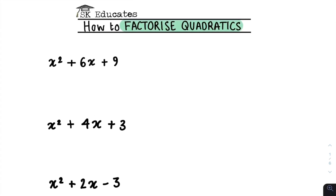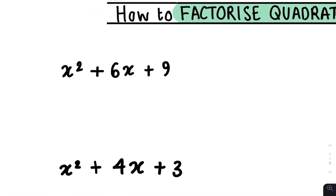Hi guys, in today's video I'm going to be teaching you how to factorise quadratics. Here we'll be dealing with simpler expressions that do not involve coefficients. A coefficient is simply a number before x squared — this could be 2, 3, 4, 20, it doesn't really matter. That approach is a bit different and will be dealt with in a later video. But for now, let's start with the first example.